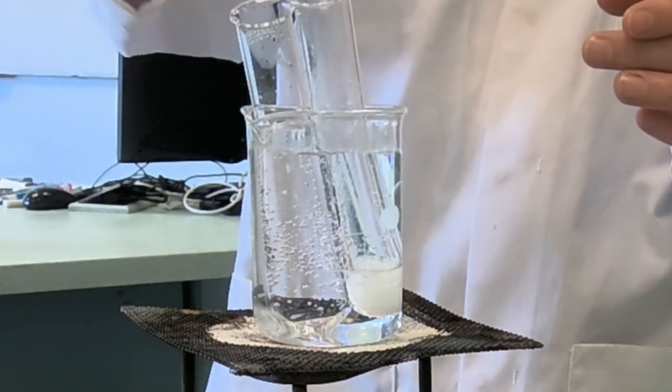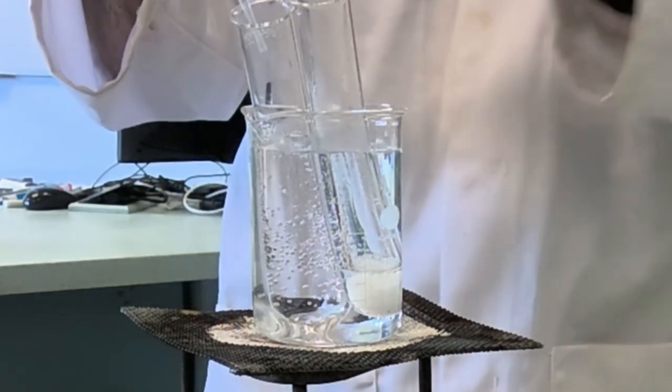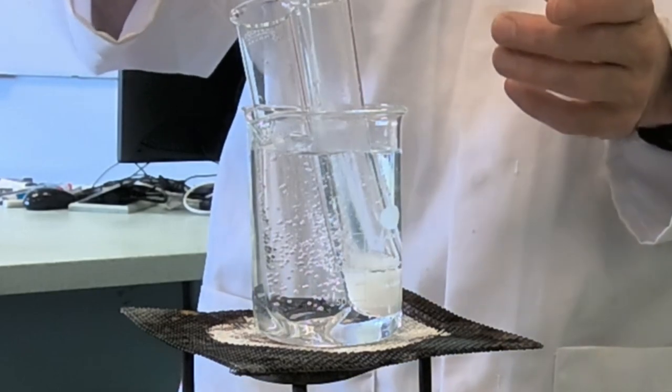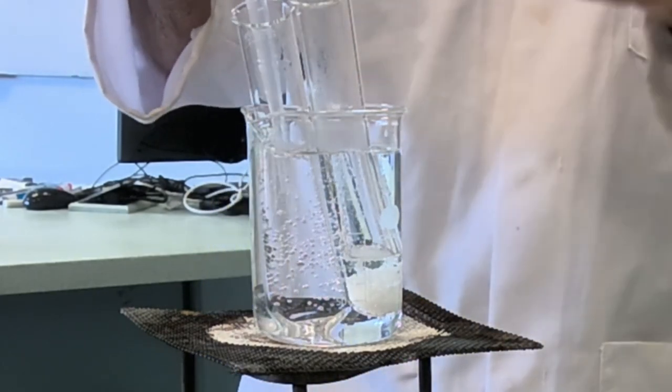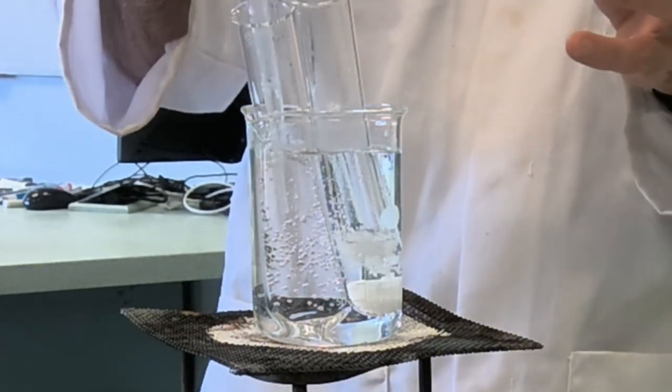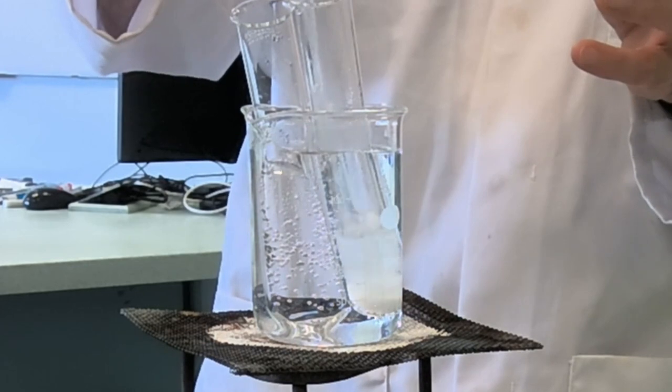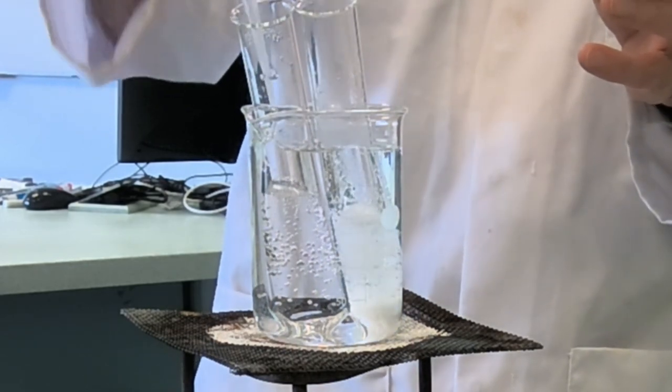Benzoic acid has got a carboxylic acid group which is hydrophilic, which makes it want to dissolve. But it's also got a benzene ring, and that's stopping it dissolving. So it's a balance between these two things. Benzoic acid is actually not that soluble in hot water.